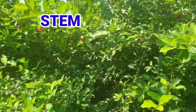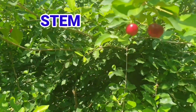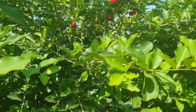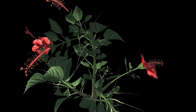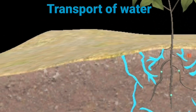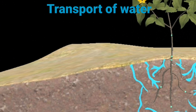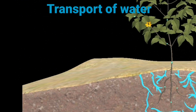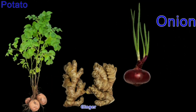The stem of a plant grows above the ground. The stem has branches, leaves, fruits and flowers. What are the functions of the stem? The stem holds the plant upright. The stem supports the branches, leaves, flowers and fruits. Water travels from the roots to the leaves through the stem. The stem also carries food made by the leaves to different parts of the plant. Some plants such as potato, ginger, onion and sugar cane store extra food in their stems.